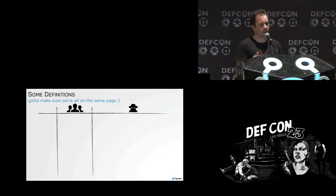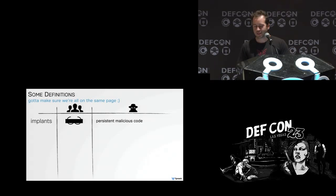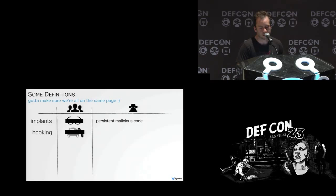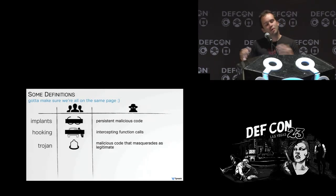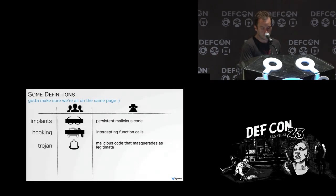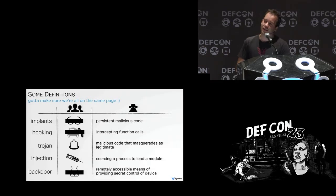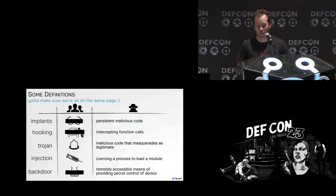Since we're in Vegas, I think it's good to define any possibly ambiguous terms. In the context of this presentation: implants are malicious persistent code; hooking is intercepting function calls, installing a hook or a detour; a Trojan is a malicious program that pretends to be benign; injection is getting code into a remote process; and a backdoor is code that provides undetected remote control of a computer.